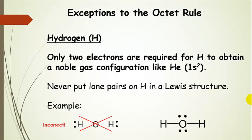The first of these is hydrogen. Hydrogen only requires two electrons to have a noble gas configuration. In our correct Lewis structure for water, we see that hydrogen has two electrons shared with oxygen, each one, and that's perfectly correct.